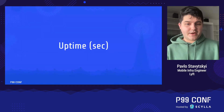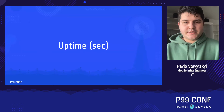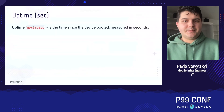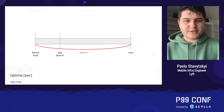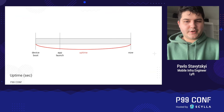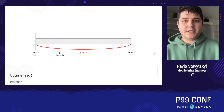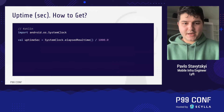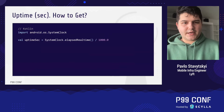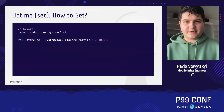The first metric we'll get is uptime — the time since the device booted, measured in seconds. On the graph we can see the line between device boot and now, which is the time between those two data points. To get it, we use the Android SDK SystemClock API.